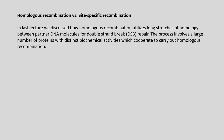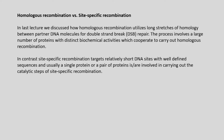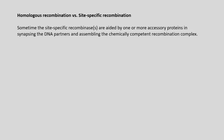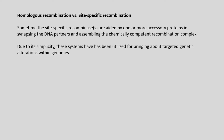Let us understand homologous recombination versus site-specific recombination. Homologous recombination (HR) utilizes long stretches of homology between partner DNA molecules for double strand break repairs, involving a large number of proteins with distinct biochemical activities. In contrast, site-specific recombination targets relatively short DNA sites with well-defined sequences, and usually a single protein or a pair of proteins carries out the catalytic steps. Sometimes site-specific recombinases are aided by accessory proteins in synapsing the DNA partners and assembling the chemically competent recombination complex.